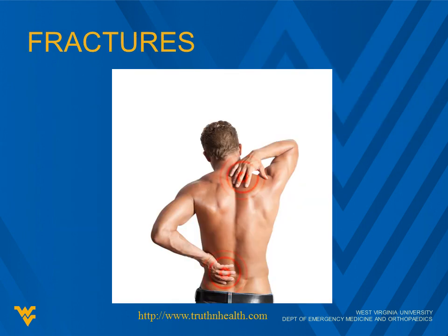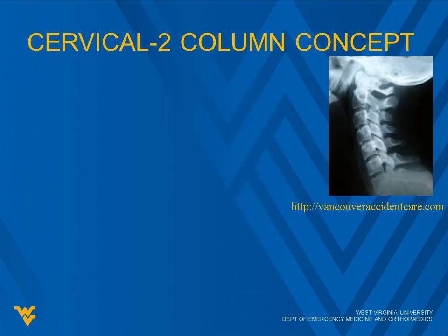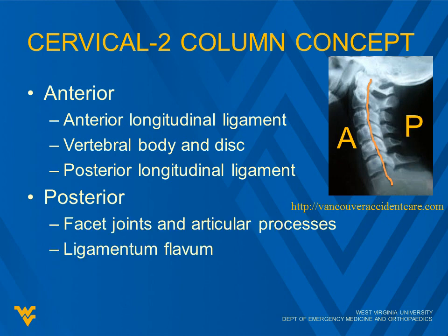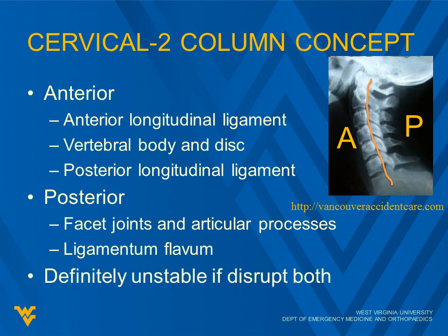We're going to spend the majority of our time on fractures — that's where we see a lot of board questions, and we see a lot of these patients as well. For the cervical spine, we use a two-column concept: the anterior longitudinal ligament, vertebral body, disc, and posterior longitudinal ligament make up the anterior column. The posterior column is everything behind that — facet joints, articular processes, and the ligamentum flavum. It's definitely unstable if we disrupt both columns. It could possibly be unstable if you disrupt even just one, but that depends.